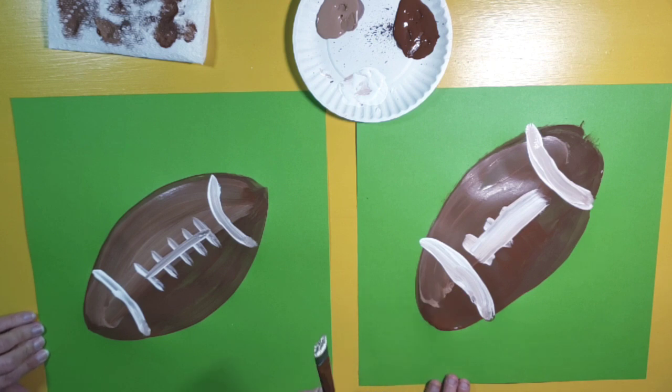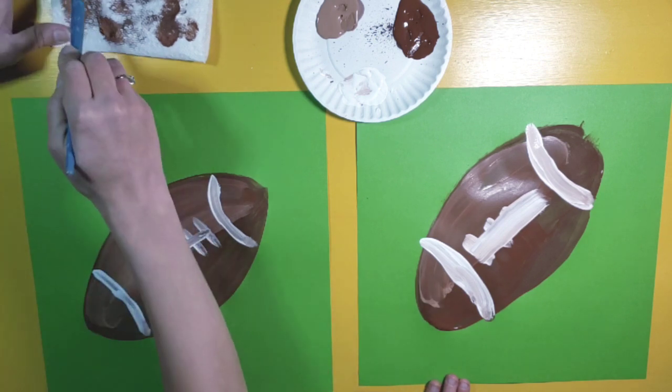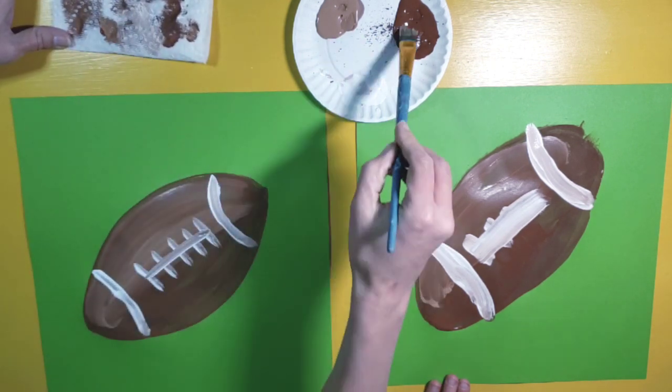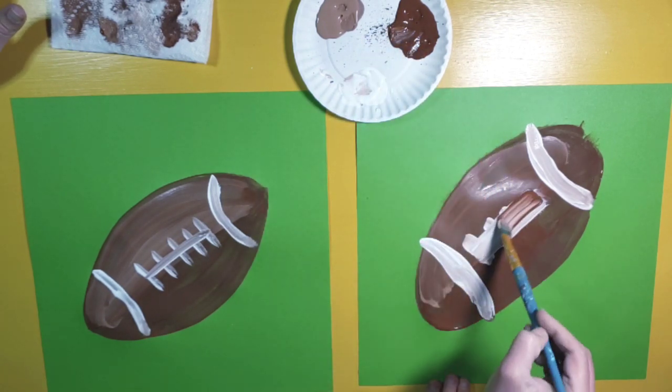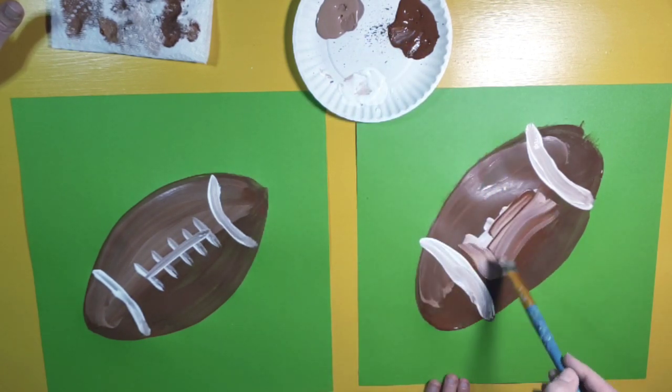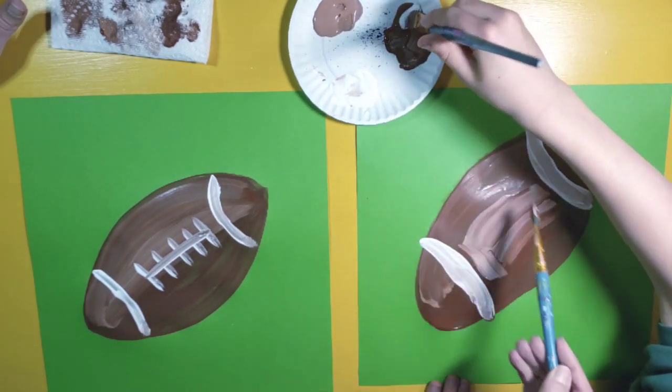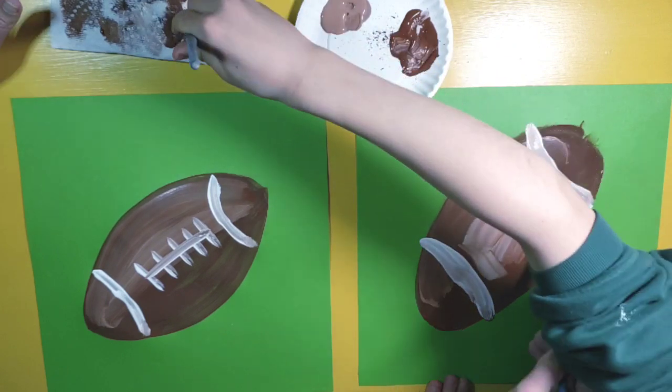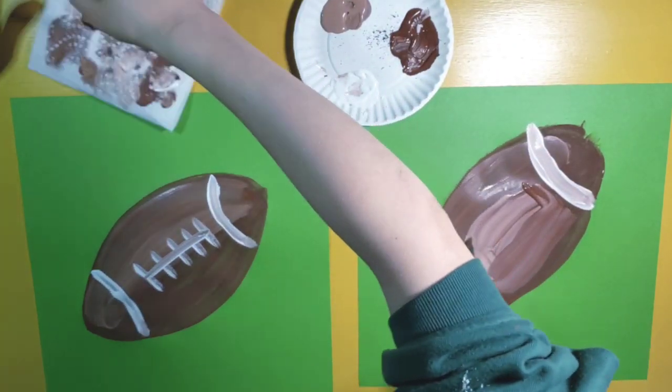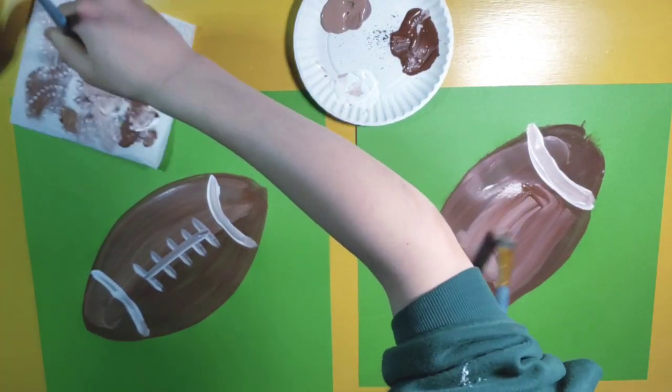If you accidentally make your line too thick, you can always take some dark brown and you can kind of blend it so that it's not a big deal. And then go back over it with your white and make the new marks.